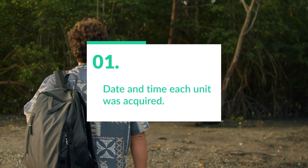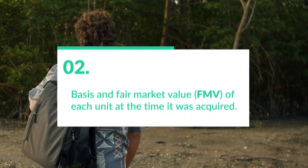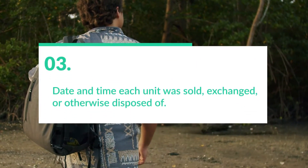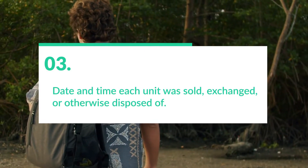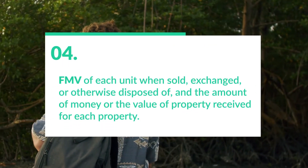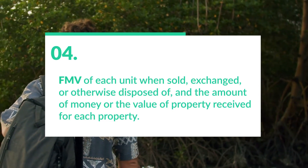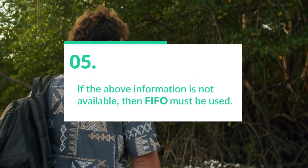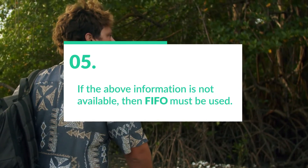The information required for specific identification is: first, the date and time each unit was acquired; second, the basis and fair market value of each unit at the time it was acquired; third, the date and time each unit was sold, exchanged, or otherwise disposed of; fourth, the fair market value of each unit when sold, exchanged, or otherwise disposed of; and the amount of money or value of property received for each unit. If the above information is not available, then FIFO has to be used. This is why it's important to keep good records — if you have that information, you can manage your capital gains and losses much better.